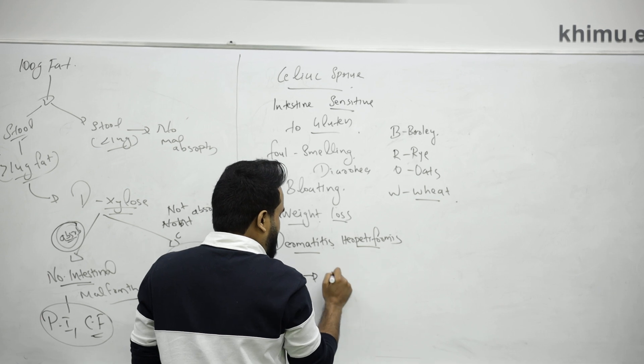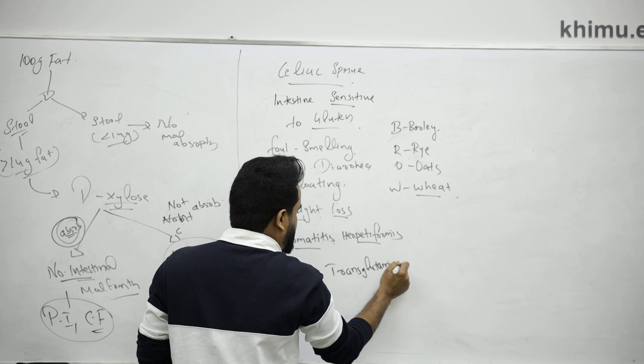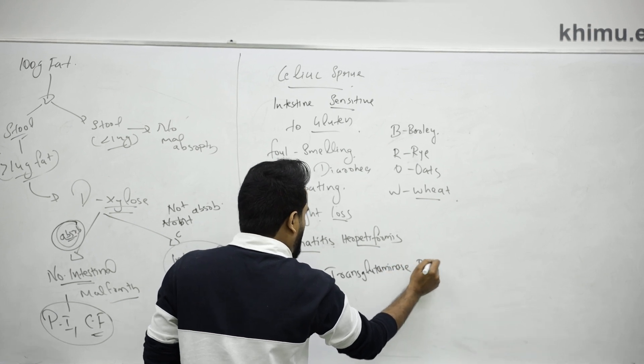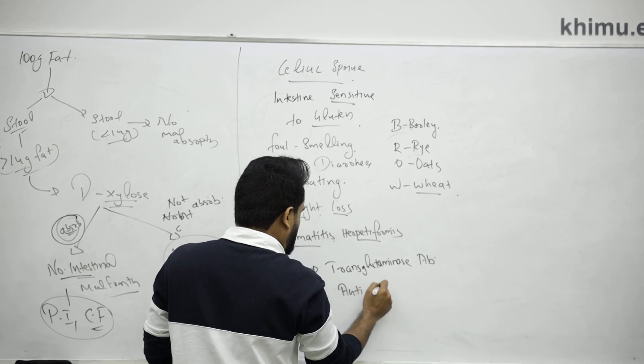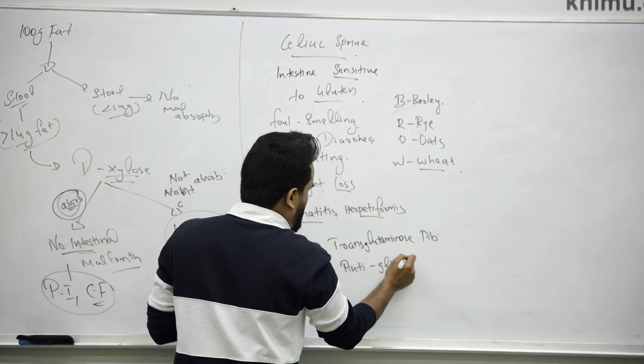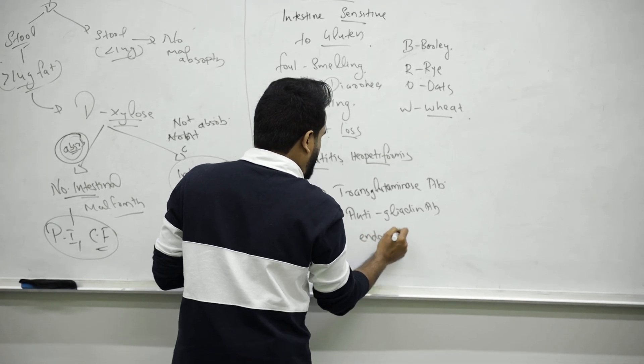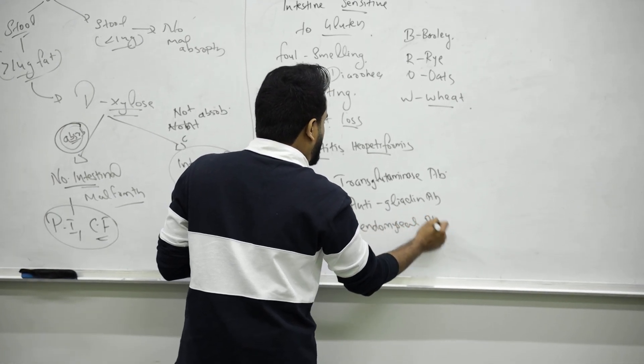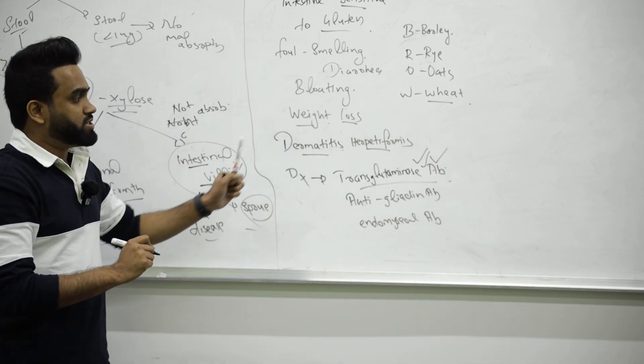For diagnosis, you can see transglutaminase antibody, anti-gliadin antibody, or endomysial antibody. Always remember, the best answer to choose will be transglutaminase, that is the best antibody you have to choose here.